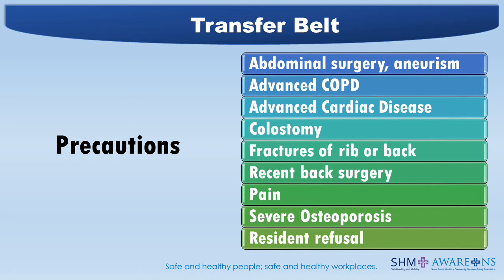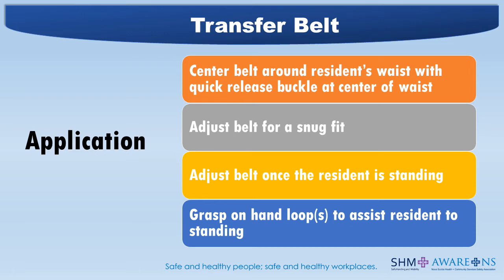Before using a transfer belt, the resident's consent is very important. If they don't consent, use a mechanical lift. To apply: center the belt around the resident's waist with quick-release buckles at the center of the waist, and adjust the belt for a snug fit — you should be able to slide your open hand flat between the belt and the resident. Adjust the belt once the resident is standing, as we all get skinnier when we stand up. Grasp the hand loops to assist the resident to stand.